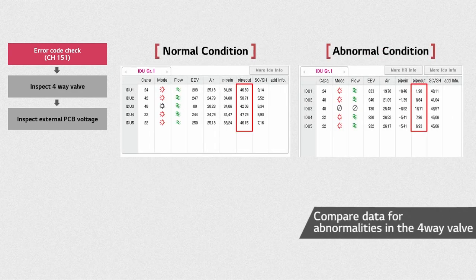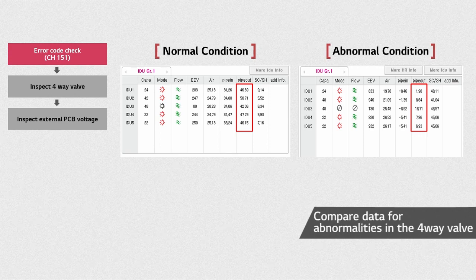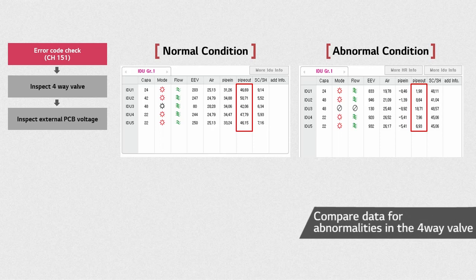You can check any problems or malfunctions of the 4-way valve through LGMV. In a normal operation, during heating mode, pipe-out temperature should be high, normally above 40 degrees.